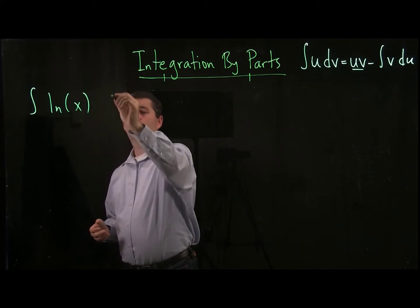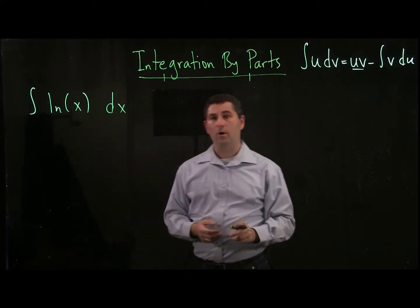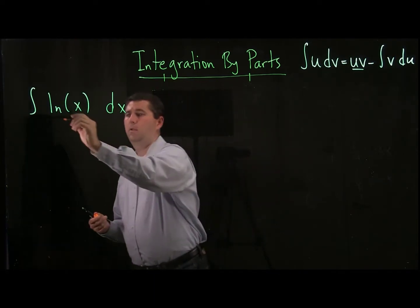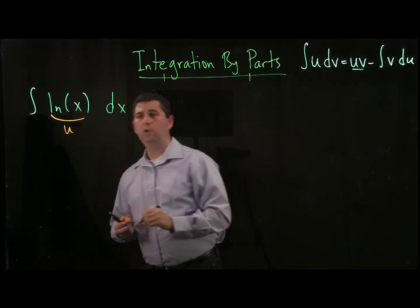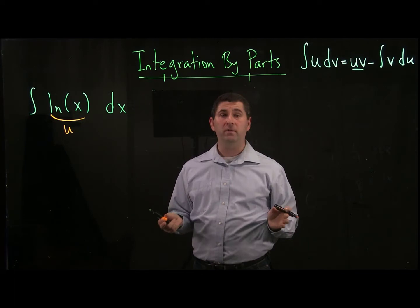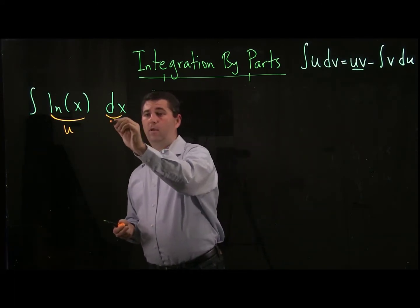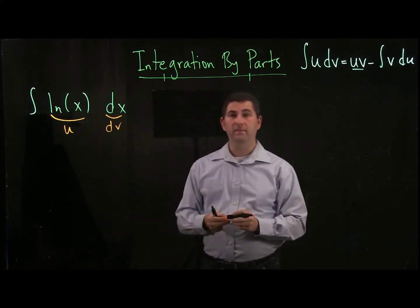An example of this is in the following antiderivative. I want to find the antiderivative of the natural logarithm. If we use u as our ln of x, this is wonderful because it means we have to take the derivative of ln of x instead of finding its antiderivative.